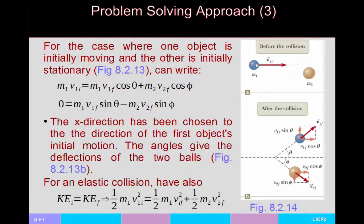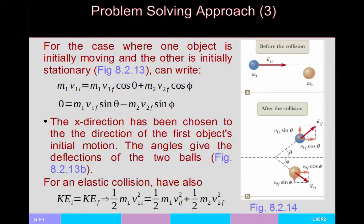In the simple case: one object is initially moving and the other is stationary. Take the direction the first object moves as the x-direction. Initially, the system's momentum is M1·V1_initial in the x-direction, so the x-component is this mass times this velocity, and the y-component is zero since neither has y-motion. After the collision, both objects are moving off-axis. The x-components of final momentum are M1·V1f·cos(θ) and M2·V2f·cos(φ), and the y-components are M1·V1f·sin(θ) and negative M2·V2f·sin(φ) — the minus sign ensures y-momentum cancels to zero.